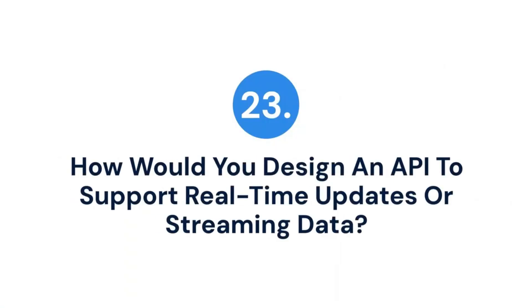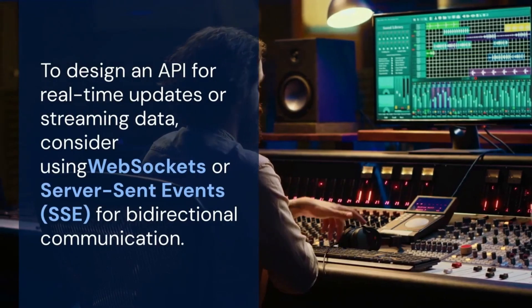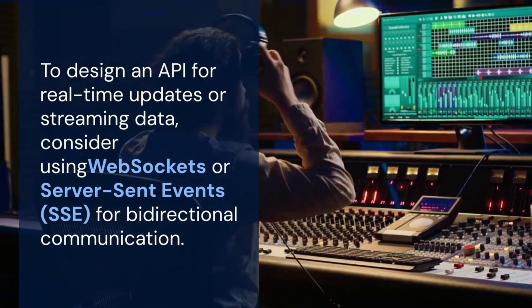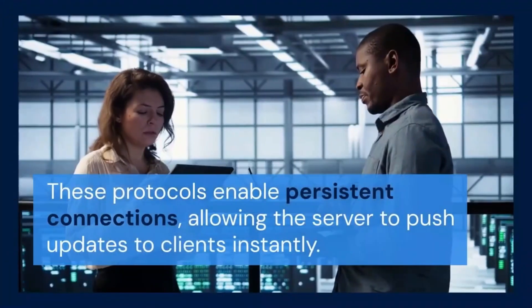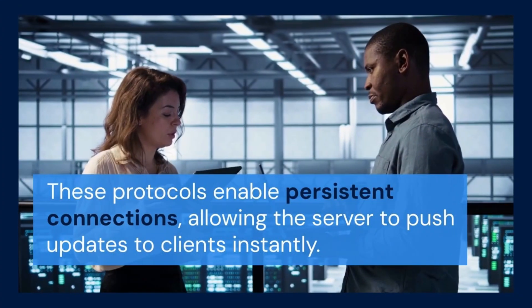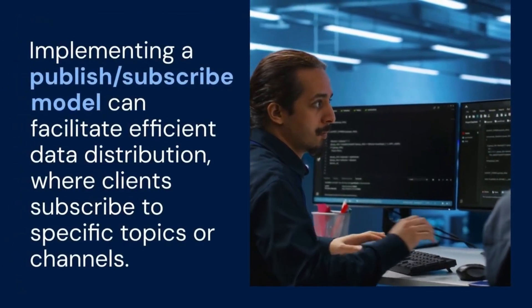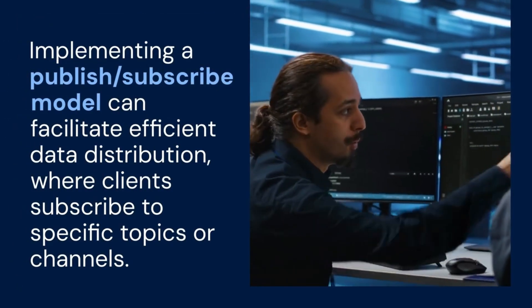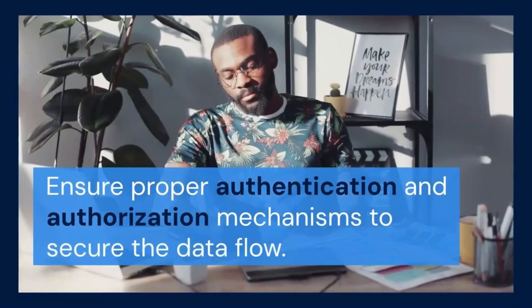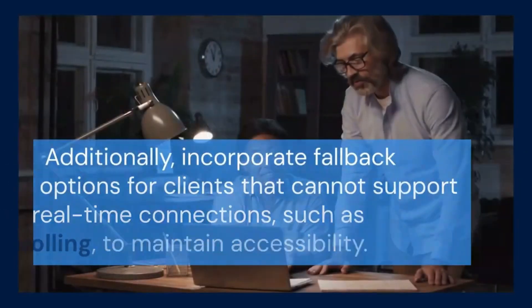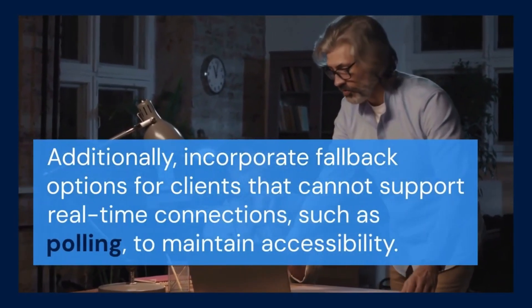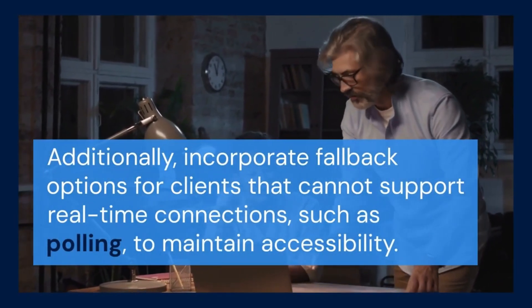23. How would you design an API to support real-time updates or streaming data? To design an API for real-time updates or streaming data, consider using WebSockets or Server-Sent Events (SSE) for bidirectional communication. These protocols enable persistent connections, allowing the server to push updates to clients instantly. Implementing a publish-subscribe model can facilitate efficient data distribution, where clients subscribe to specific topics or channels. Ensure proper authentication and authorization mechanisms to secure the data flow. Additionally, incorporate fallback options for clients that cannot support real-time connections, such as polling, to maintain accessibility.